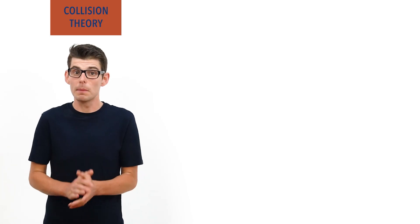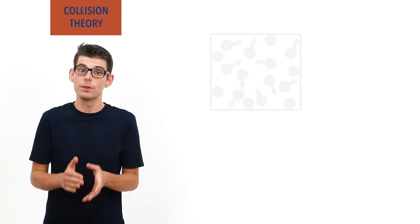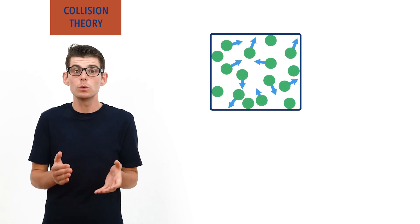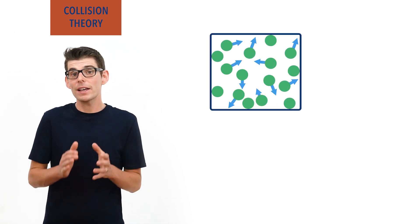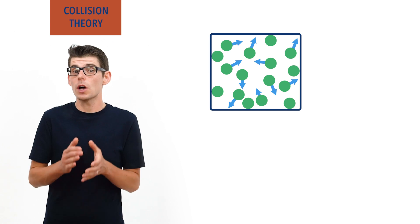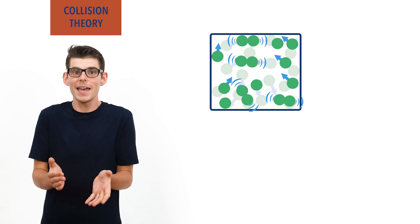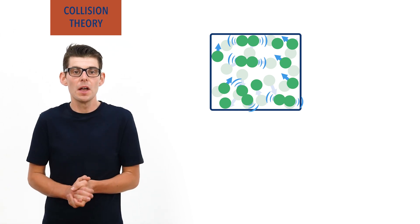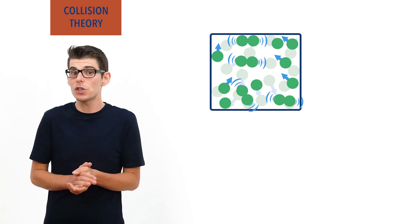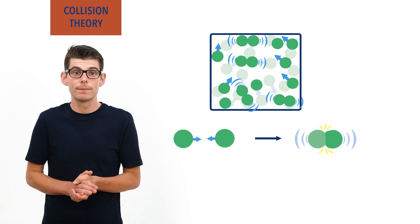In a gaseous system, particles are constantly randomly moving in all directions. As a result, the particles are constantly colliding and hitting each other. Just like with any two objects hitting each other, particles exchange energy when they collide.